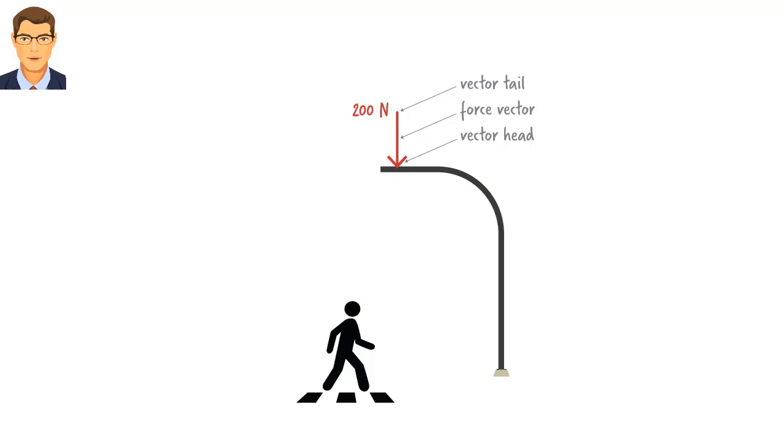A vector also has a direction. Here, the force is pointing downward, or more accurately, it makes a 90-degree angle in the clockwise direction with the horizontal axis. We can also define a line of action for our vector. This is the line that passes through the head and tail of the vector and extends infinitely in either direction. When dealing with mechanics problems, we may also be interested in the point of application of the force.